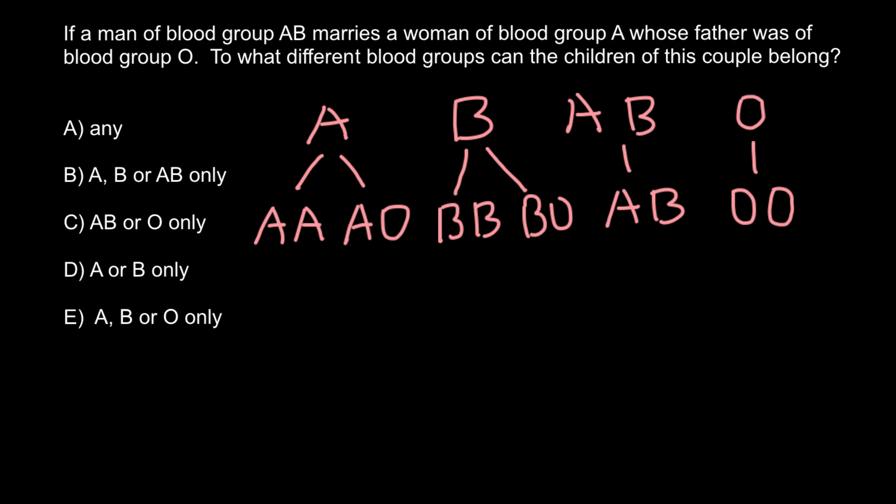We know that this woman's father belonged to the blood group O, that means that his genotype was OO. This gives us information about the genotype of this female. She must get one of the alleles from the father's side. Both alleles are O, so her genotype has to be AO. She got the A allele from her mother and the O allele from her father.